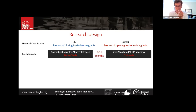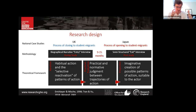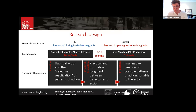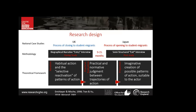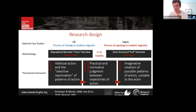The research draws on narrative data collected with 26 degree-mobile student migrants. Each participant was interviewed twice: once during their studies and once after graduation. The study uses a theoretical framework from Emirbayer and Mische called the chordal triad, which delineates agency's temporal nature by distinguishing three overlapping elements oriented towards the past, present, and future. This draws attention to how actors call on past experiences, present contingencies, and imagined futures when making choices.